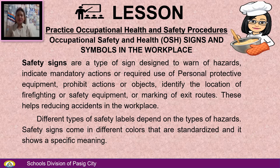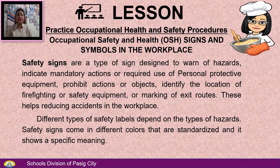Today's lesson, we will discuss about practicing occupational health and safety procedures — occupational safety and health, OSH signs and symbols in the workplace. Safety signs are a type of sign designed to warn of hazards, indicate mandatory actions or required use of personal protective equipment, prohibit actions or objects, identify the location of firefighting or safety equipment, or mark exit routes. This helps reduce accidents in the workplace.